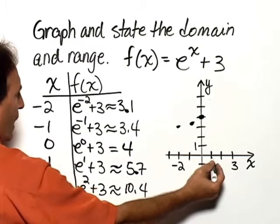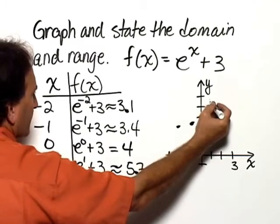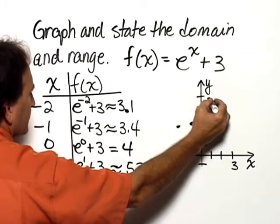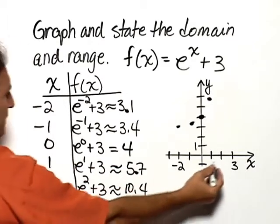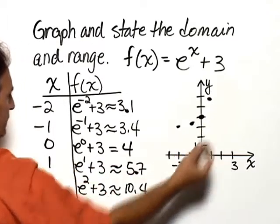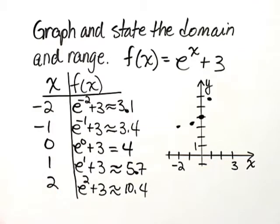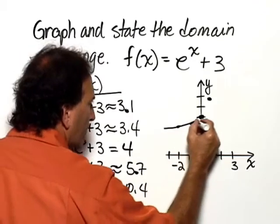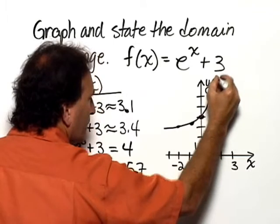For x is equal to 1, y is approximately 5.7. And then our other point of x equals 2, y is equal to approximately 10.4. That's off of our scale. And so let's draw our graph with a smooth curve through these points.